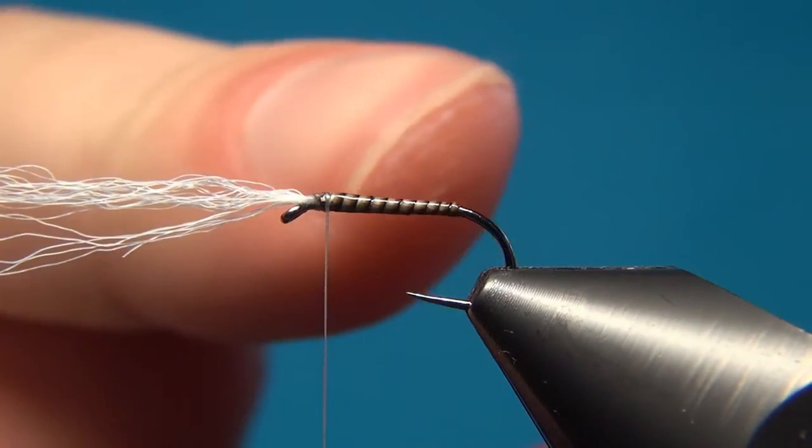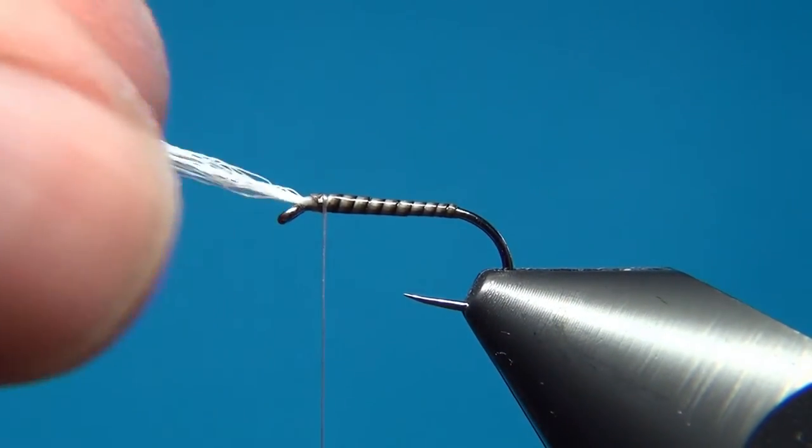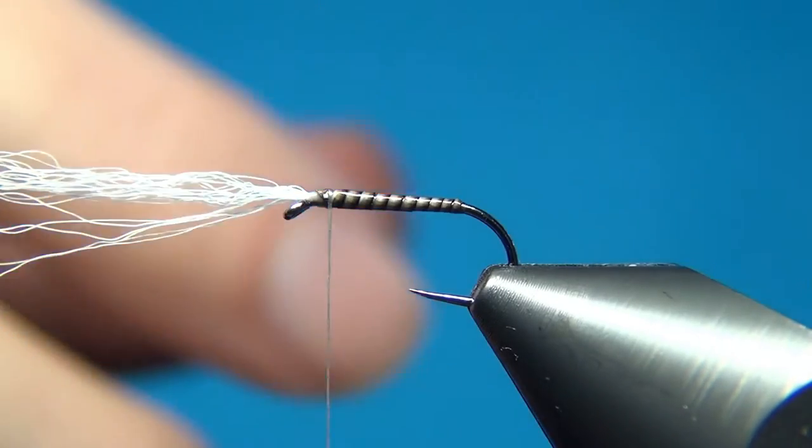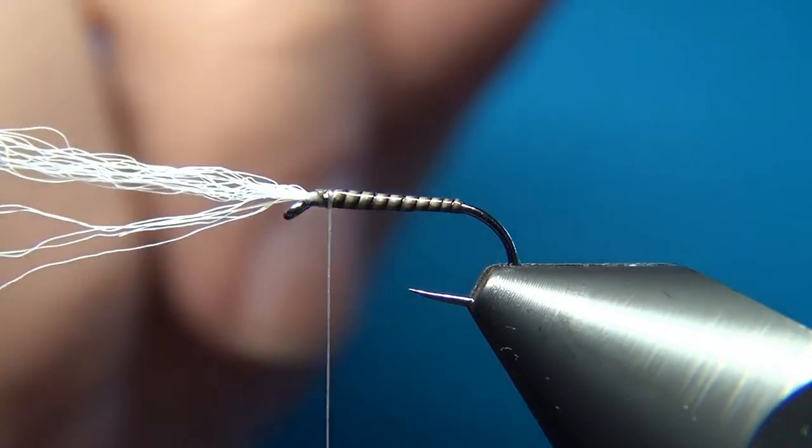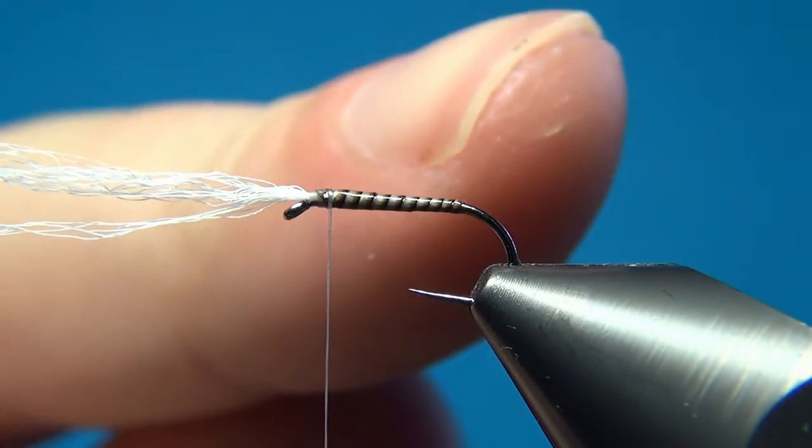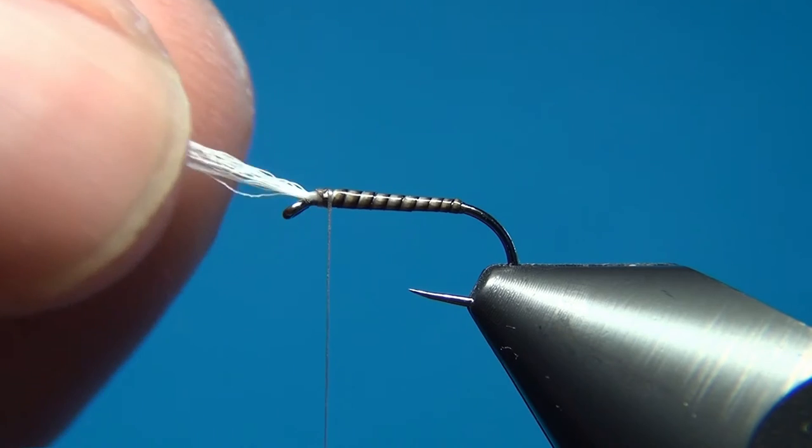Here, if you would tie a lot of these at the same time, the best way is to tie this part, then whip finish, then varnish, and then you can continue. Start tying the next one. So then, once the varnish is completely dry, we can continue with the thorax area and the gills.